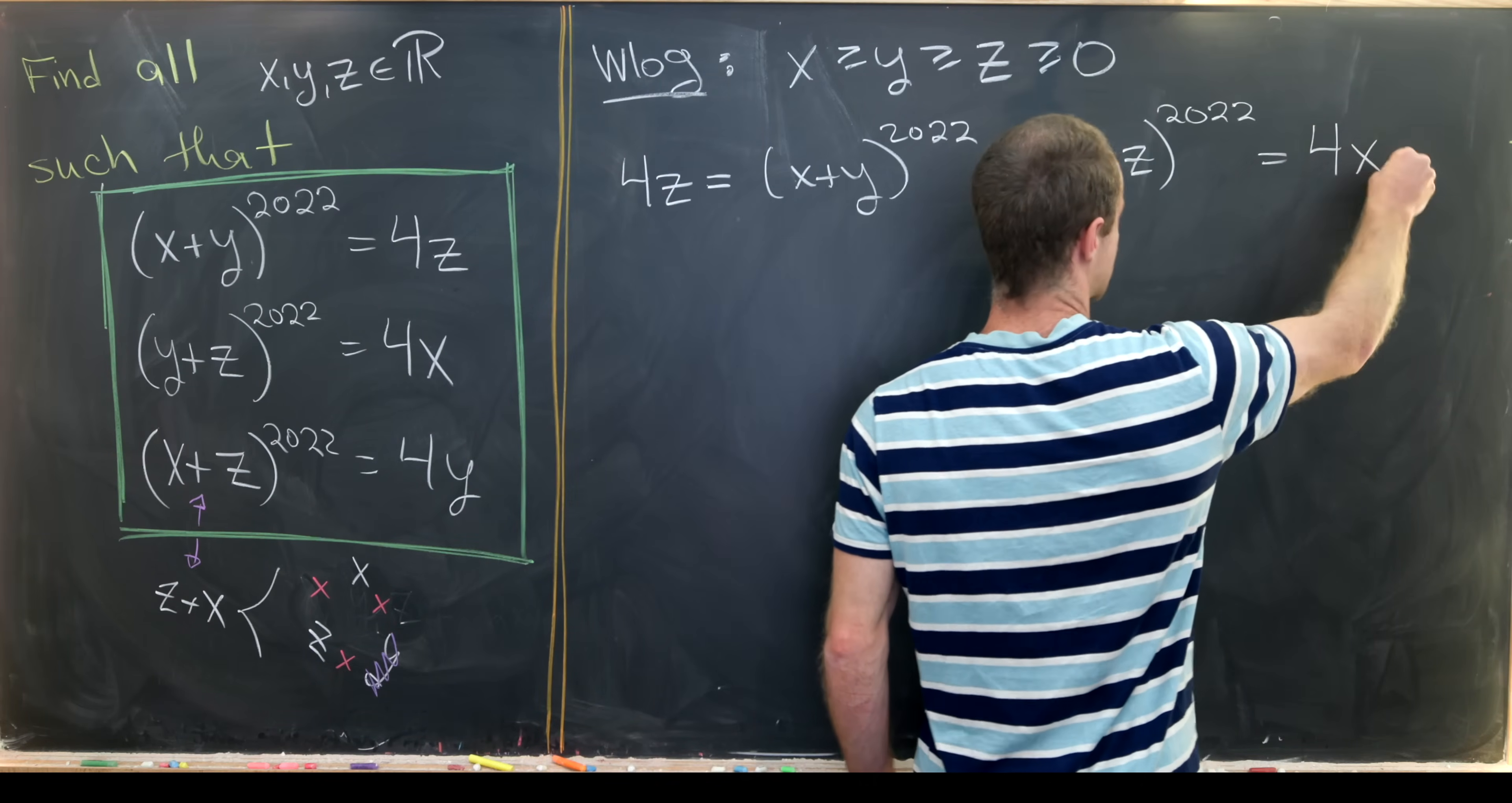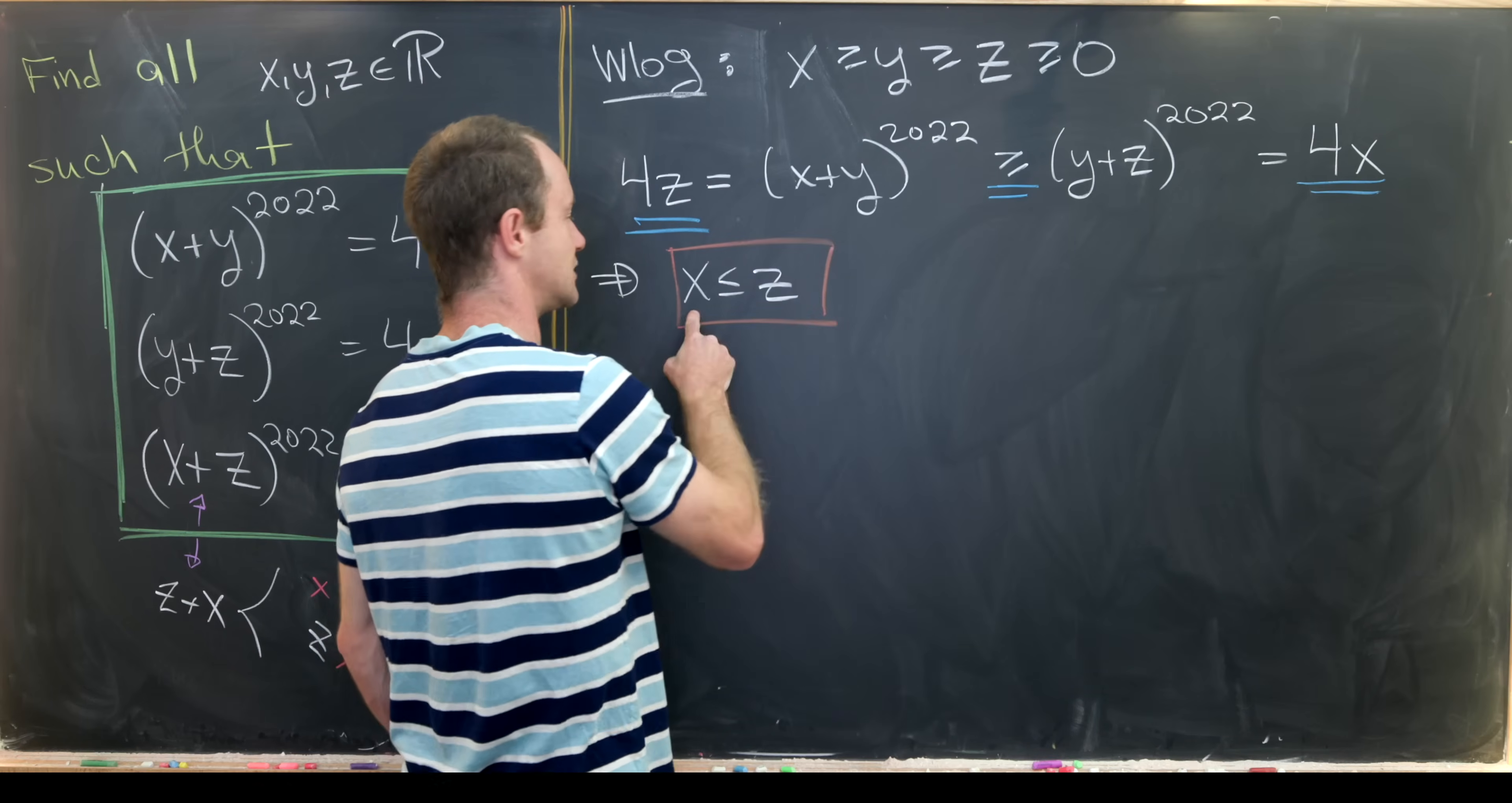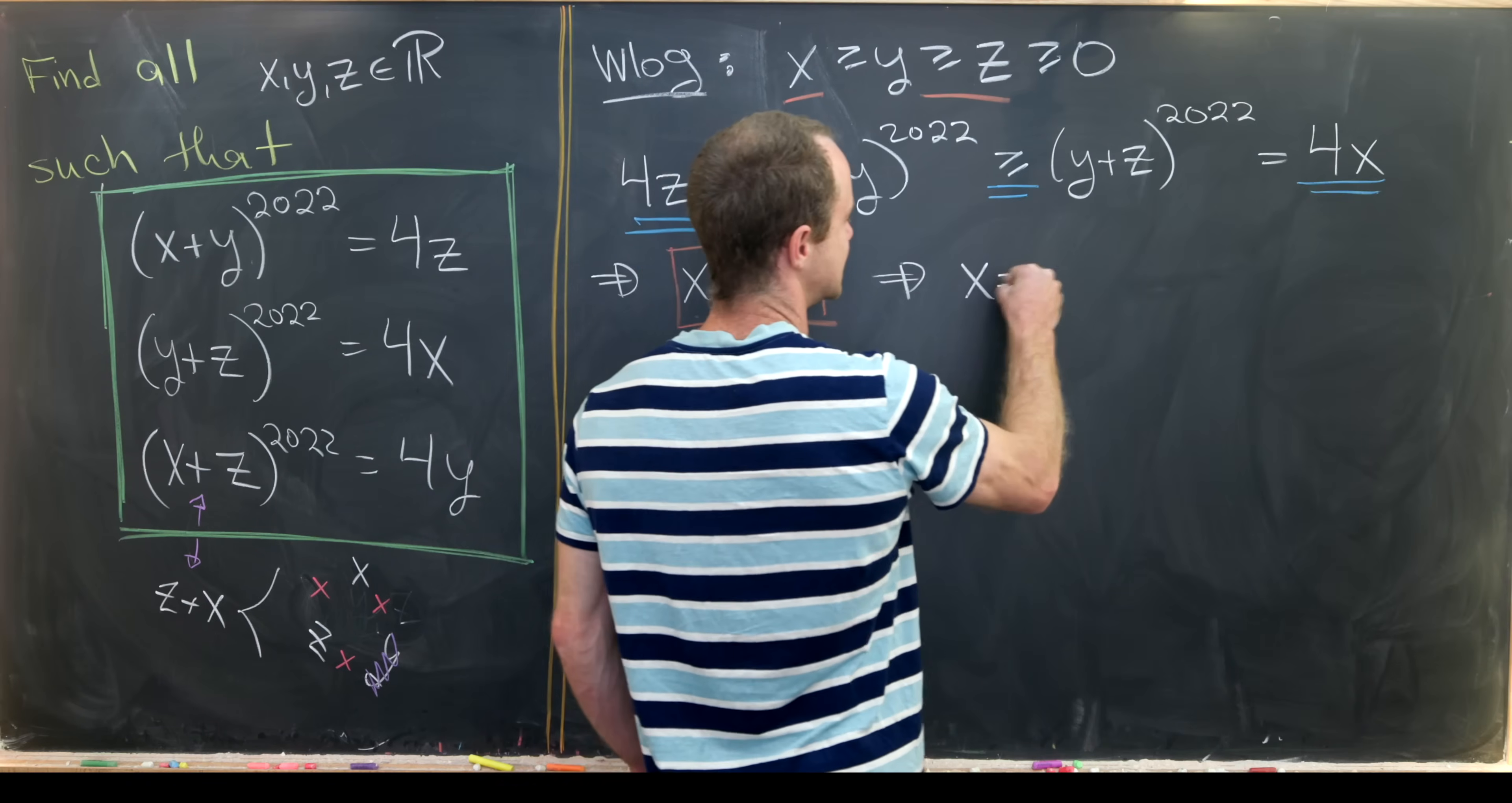But (y+z)^2022 = 4x. So now check it out. We've got 4z ≥ 4x. But that means that x ≤ z. But that means we've got x is simultaneously less than or equal to z and greater than or equal to z. But the only way for something to be simultaneously less than or equal to something and greater than or equal to something is for them to be equal. So we have x = z.